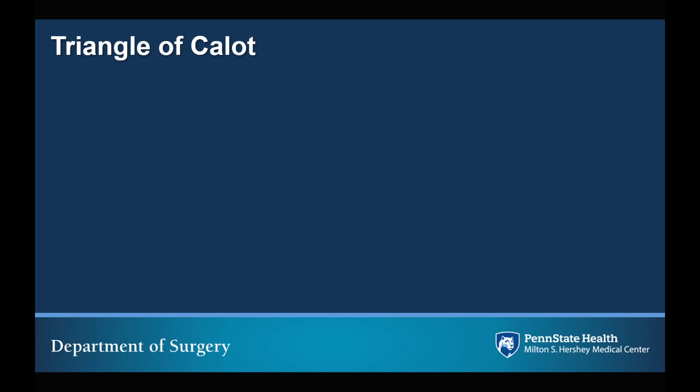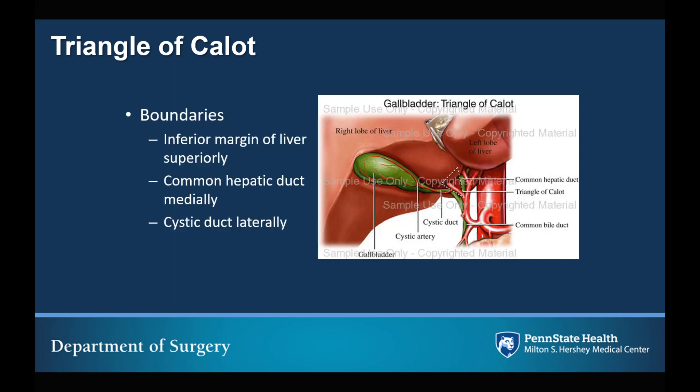The Triangle of Calot is an important landmark in biliary surgery. I encourage you to pause the video at this time and take a minute to identify the boundaries of the Triangle of Calot before resuming. The boundaries are the inferior margin of the liver superiorly, the common hepatic duct medially, and the cystic duct laterally. This triangle is important because it helps us identify key structures during gallbladder removal. The right hepatic artery passes through the triangle and divides into the cystic artery, which is at risk of injury during cholecystectomy.